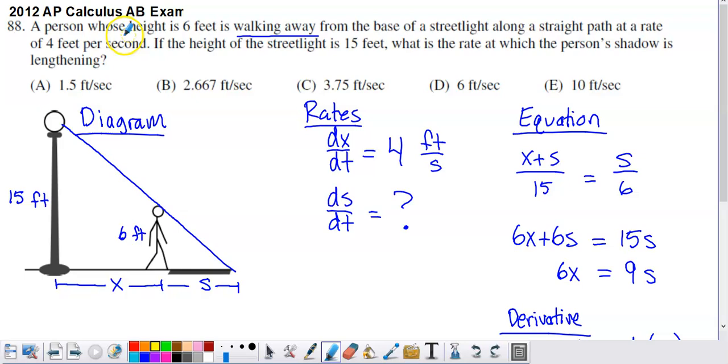They say that a person who is 6 feet tall is walking from the base of a street light along a straight path at a rate of 4 feet per second. So the person is 6 feet tall, so I've labeled their height as 6 feet.